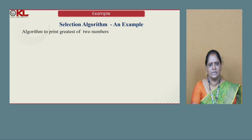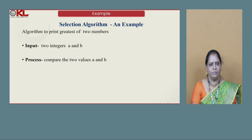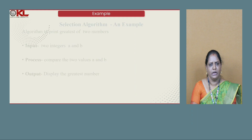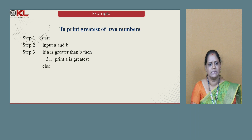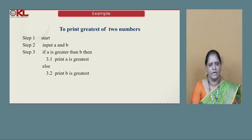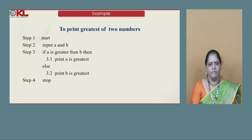Now we will do another example on selection — printing the greatest among two numbers. The input is two integers a and b. The process is to compare the two values and display the greatest number as output. Algorithm steps: Step 1 — Start. Step 2 — Input a and b. Step 3 — If a is greater than b, then print 'a is greatest', else print 'b is greatest'. Step 4 — Stop. The statement executed among 3.1 and 3.2 is based on the condition, using the keywords if and else.